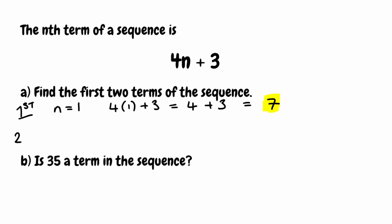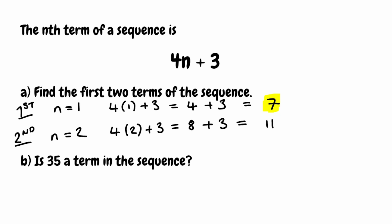To find our second term we're looking for term number 2, so n is equal to 2. Substituting into the nth term: 4 multiplied by 2, then add 3. Simplifying: 4 times 2 gives us 8, add on the 3, that gives us 11. So the second term in the sequence is 11.